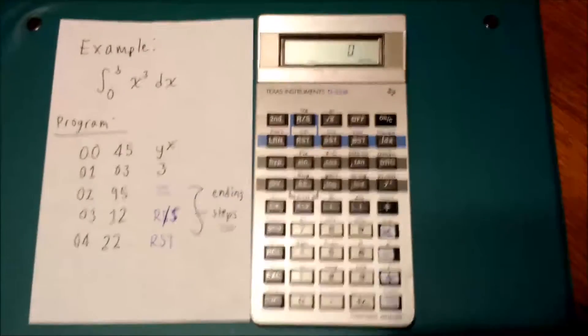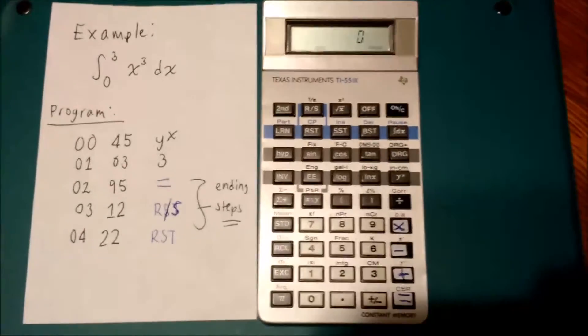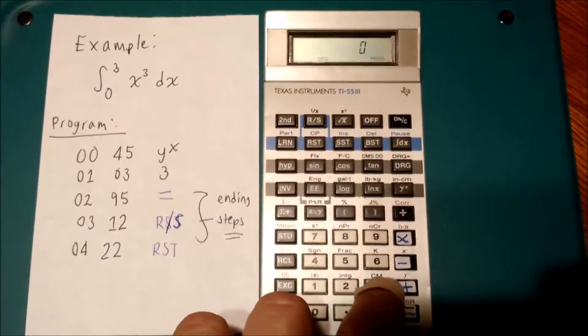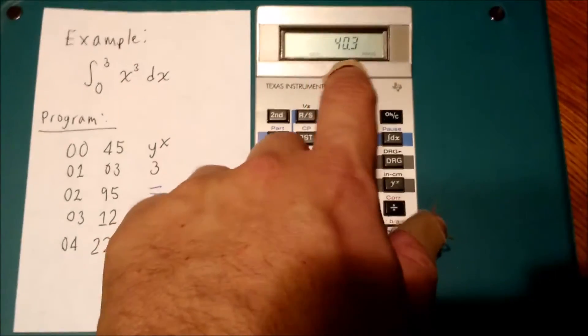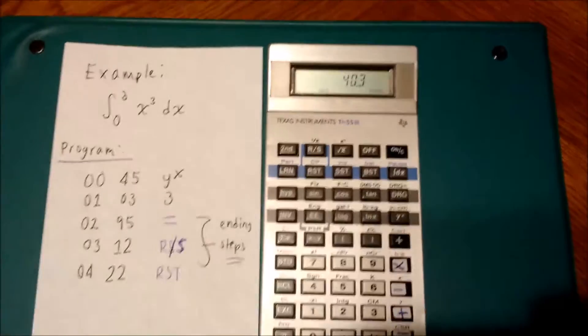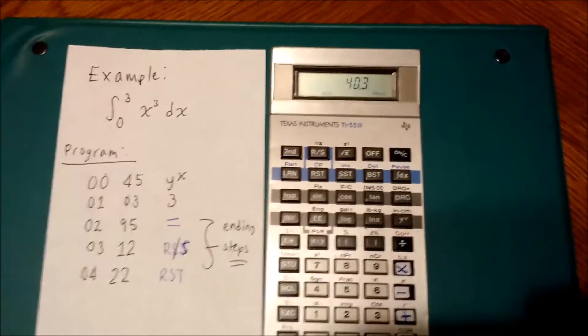For this short demonstration, I'm going to first partition the memory, so 2nd, partition, 3. Now I've got 40 steps and 3 memories. You are required to have at least 3 memories for integration on the TI-553.